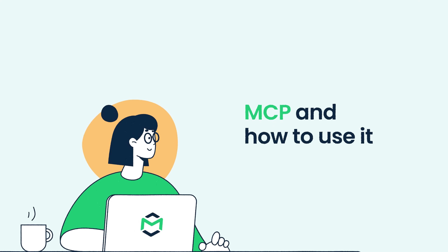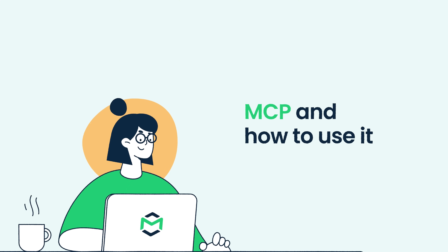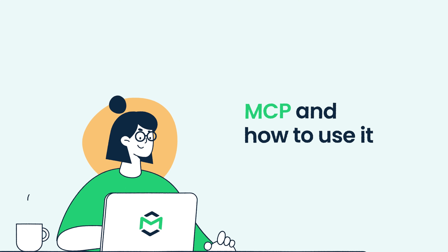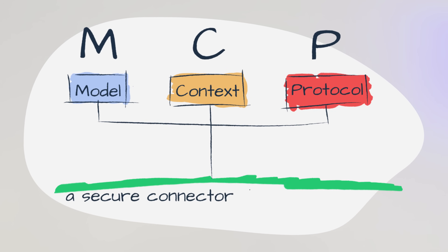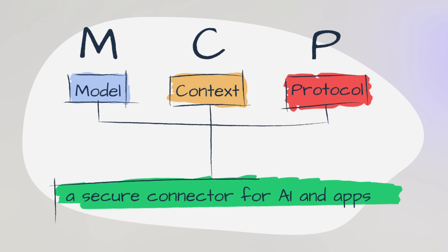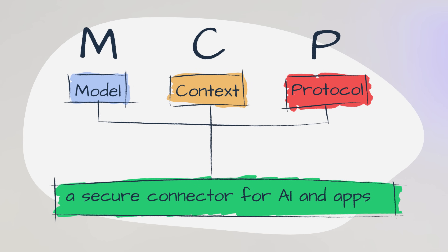Welcome to MailTrap videos where we explore the world of emails. Let's start things off by deciphering the MCP abbreviation. MCP, or Model Context Protocol, is a new protocol that creates a secure standard for connecting AI models to other applications and even to other AI models.